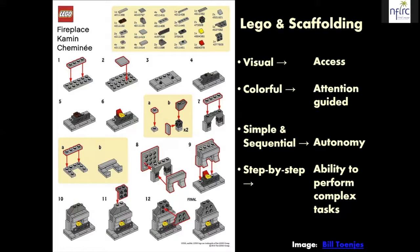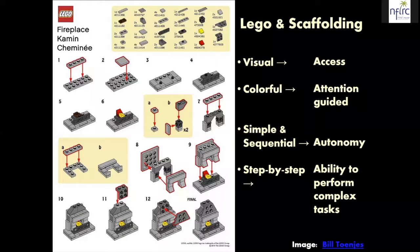Lego uses color to guide learners' attention to what they're supposed to do and in what order. The instructions are simple and sequential — every step is broken down. They don't show students the final product and say 'here are the pieces, build it.' They say: find this piece, find this piece, and then they clearly indicate this piece goes on top of that one. And in steps two and three, they show what the completed task looks like before moving to step four, just in case the learner didn't understand which dot to put the square on.